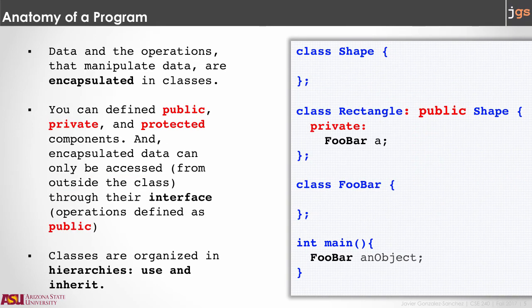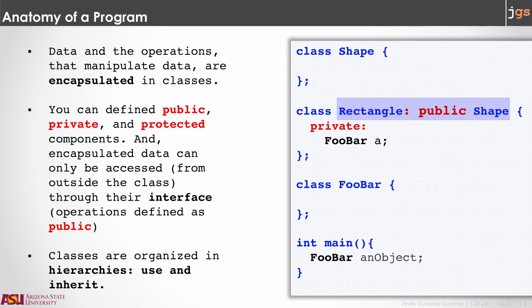The idea of having classes is to create hierarchies, which basically means that you can connect classes by creating objects from a class inside of another class, or you can do inheritance from one class to another. To create an object you follow the process you know: the class is the type and you need a name for the object. So in this example, a is an object from the class foobar inside of the class rectangle and is private. To indicate inheritance we use the colon, which is going to replace the extends keyword that we use in Java.